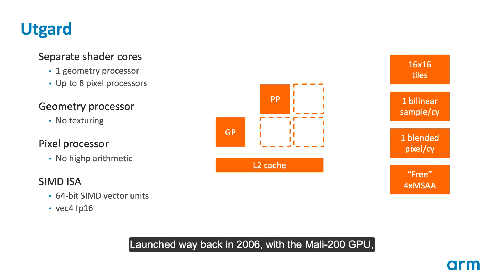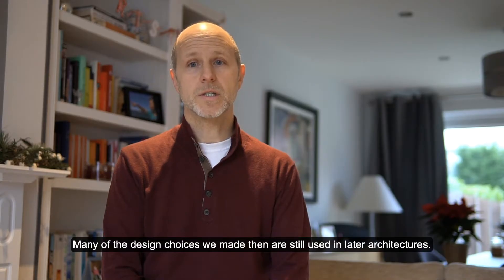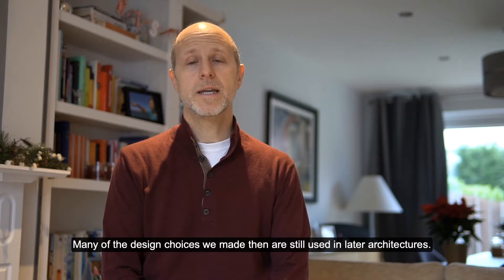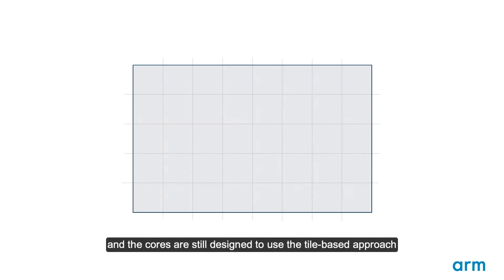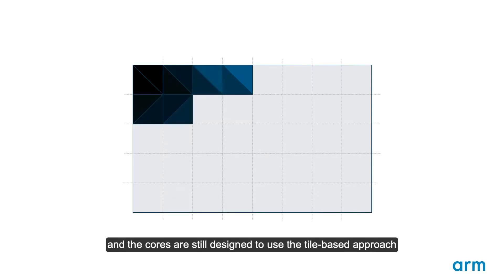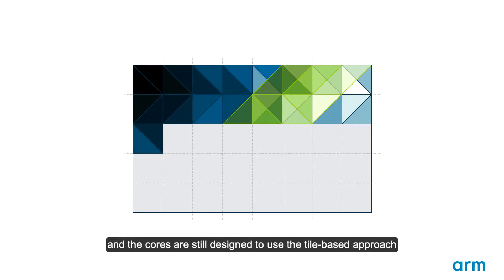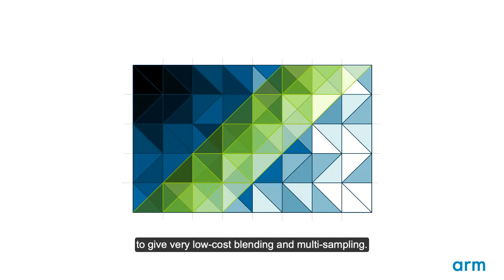Launched way back in 2006 with the Mali 200 GPU, Utgard was the first Mali architecture with a programmable core. Many of the design choices we made then are still used in later architectures. Shader cores operate on the same 16x16 pixel tiles, and the cores are still designed to use a tile-based approach to keep very low-cost blending and multi-sampling.